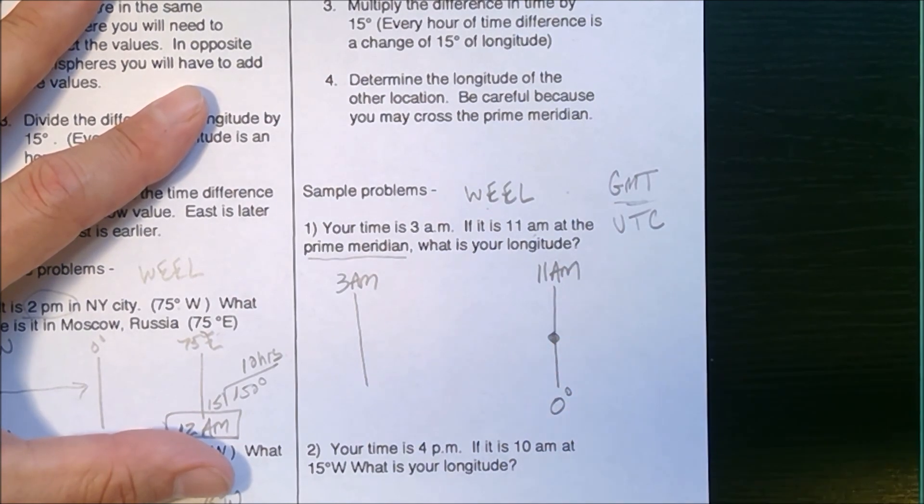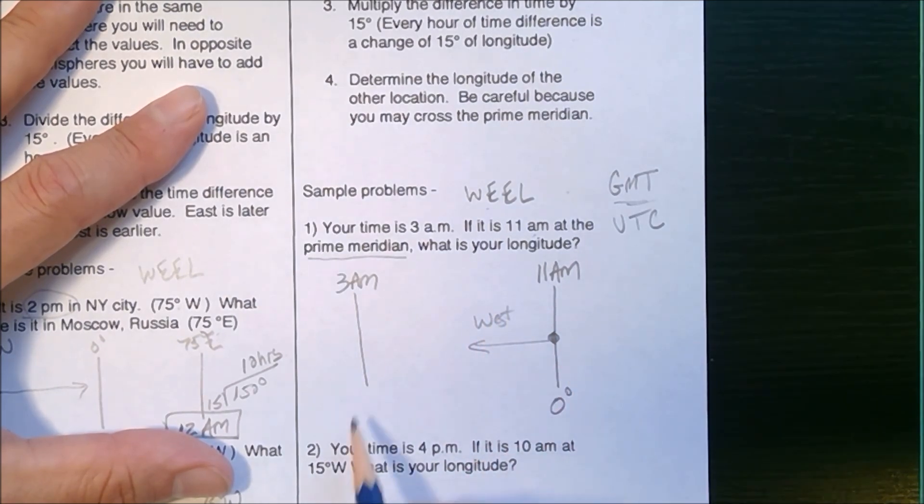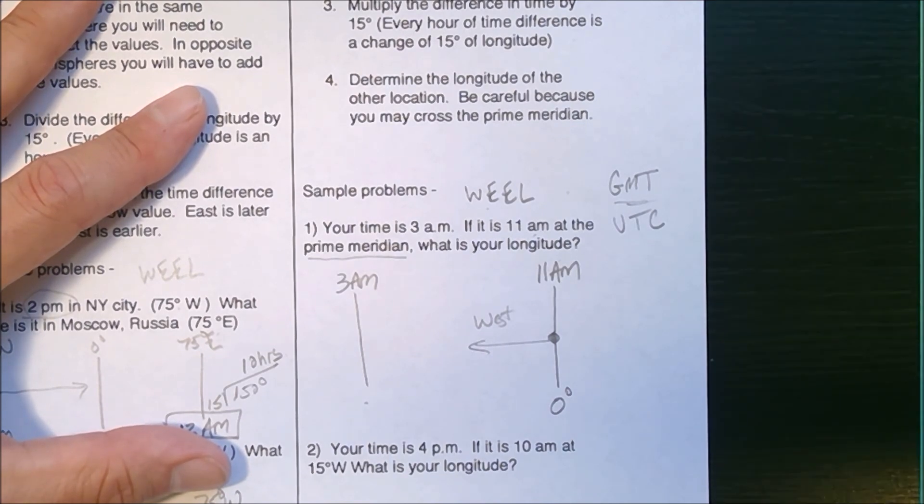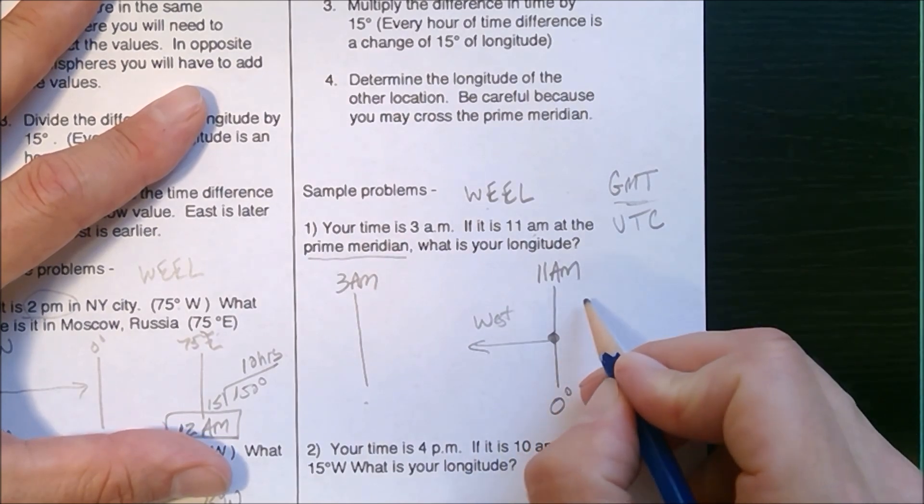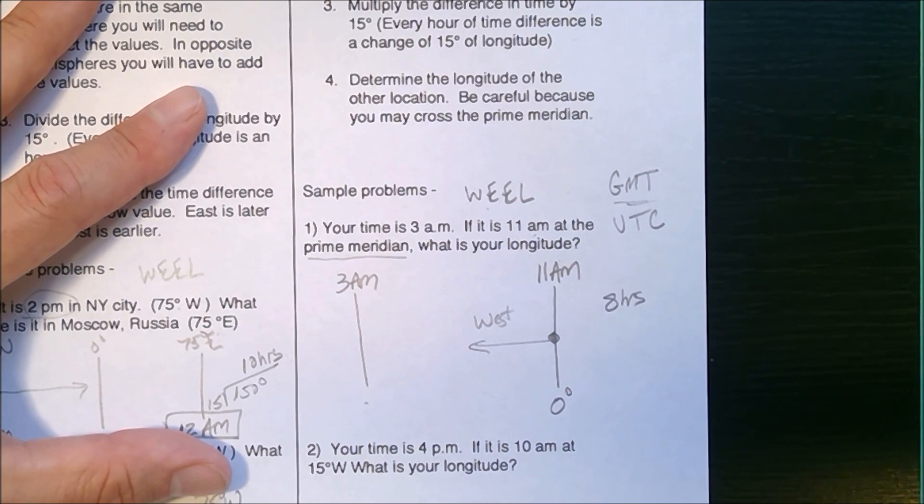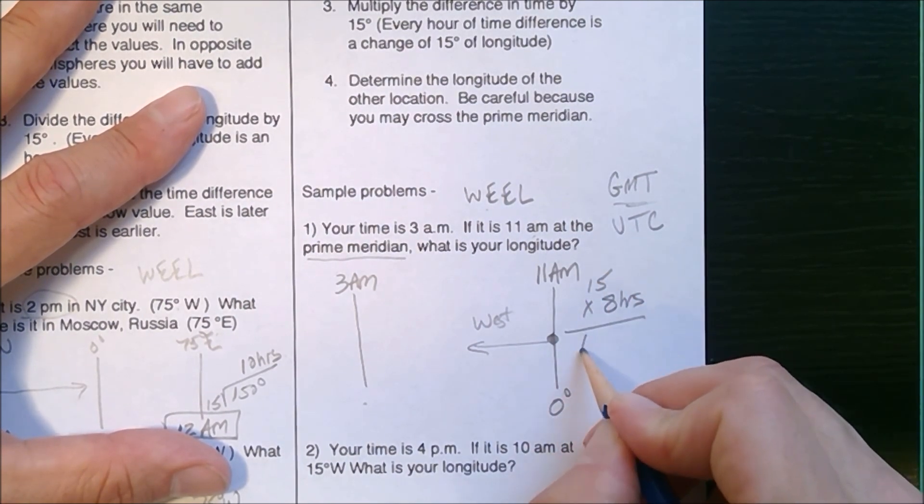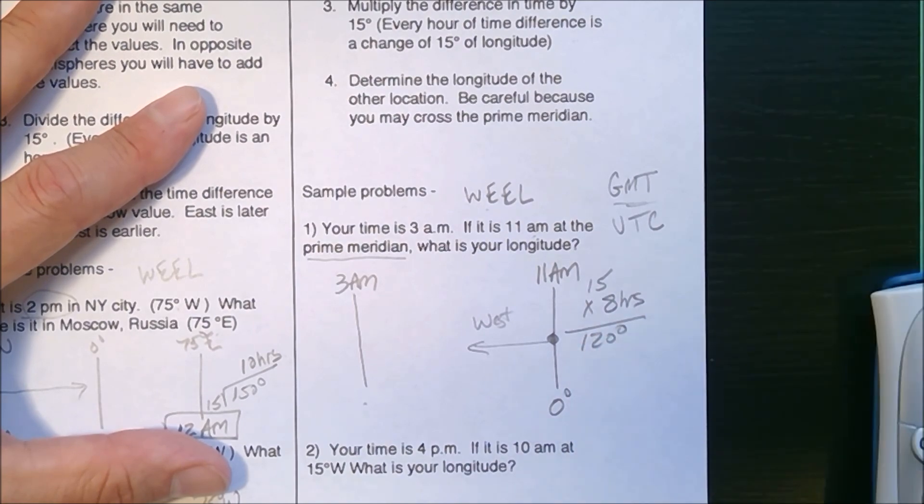My starting point is here. So I'm going to travel west. My answer here is going to be a certain number of degrees west. If I'm at 11 and go back to three o'clock, there is an eight hour time difference. So these are eight hours apart. I would take my eight hours and multiply by 15 and get 120 degrees.